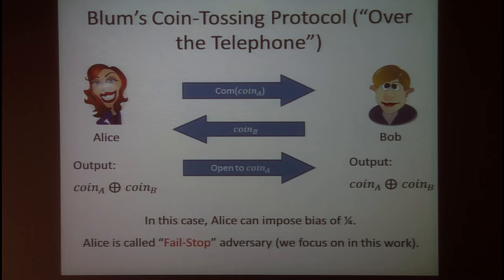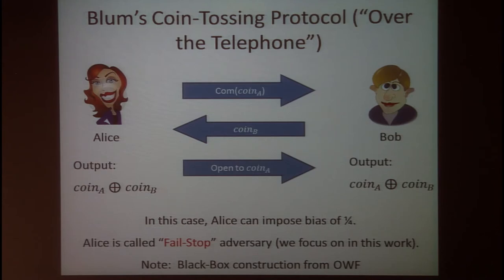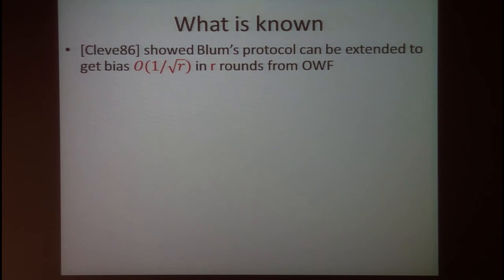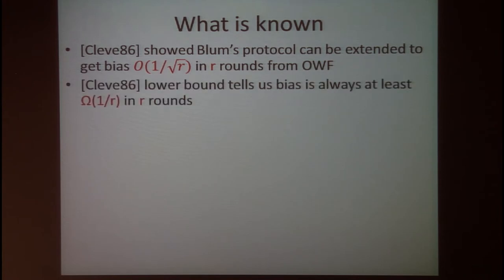This type of adversary — one who acts honestly but deviates only by deciding whether to abort early — is known as a fail-stop adversary. Blum's protocol is a black box protocol from one-way functions. Cleve showed that by repeating Blum's protocol many times and taking the majority, one can achieve bias of one over square root of r in r rounds, again assuming only one-way functions.